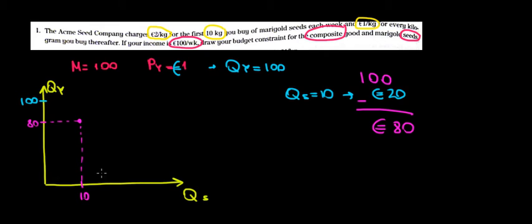And let's say we want to know the intercept on this axis. This would be the intercept if we keep spending money on seeds only. So far we spent 20 euros for 10 kilos. But what if we spend the remaining 80 euros also on seeds so that we know how much maximum seeds we can buy?